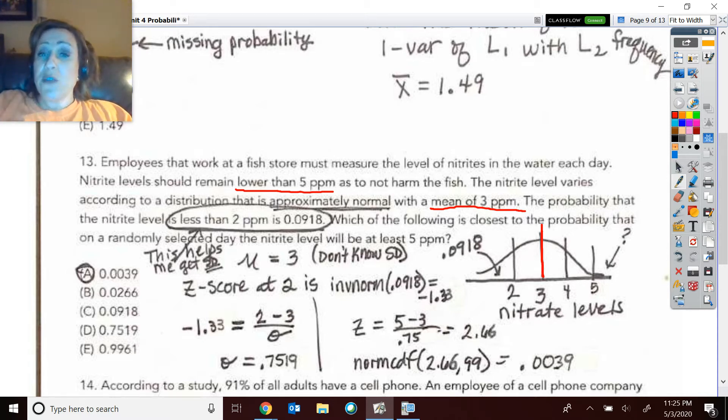So they do give me this other item of information. The probability that the nitrate level is less than 2 is 0.0918. So I can visualize from this 2 down. Now, that's not two standard deviations. That's the x value of 2. So that means I can figure out this location. I can figure out the standard deviations, the z score, where 2 is located because it has 9.18% below it.